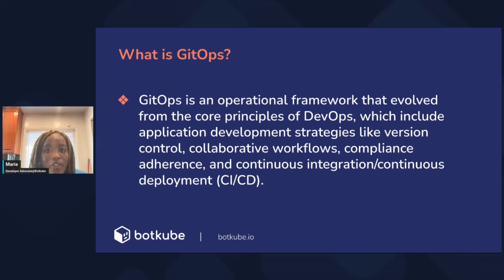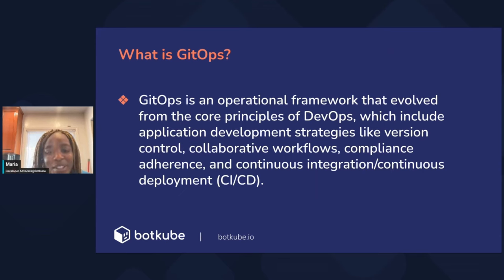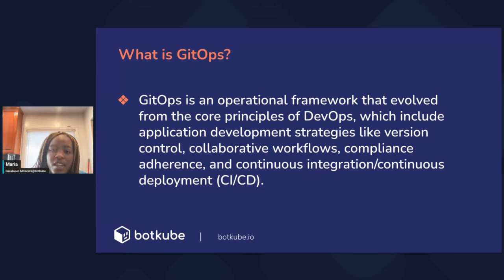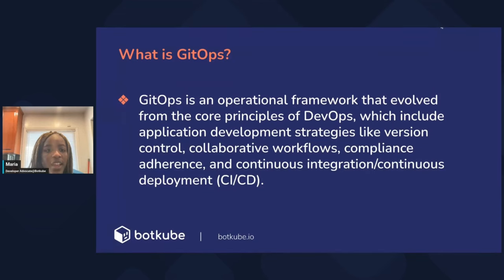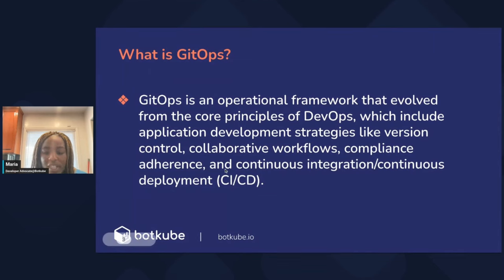I want to make sure everybody's on the same page about what GitOps is. GitOps is an operational framework that came from DevOps and it's based on four main principles: it's declarative, it's versioned and immutable, it's continuously reconciled, and apps are pulled automatically. That's all you need to know for this talk.